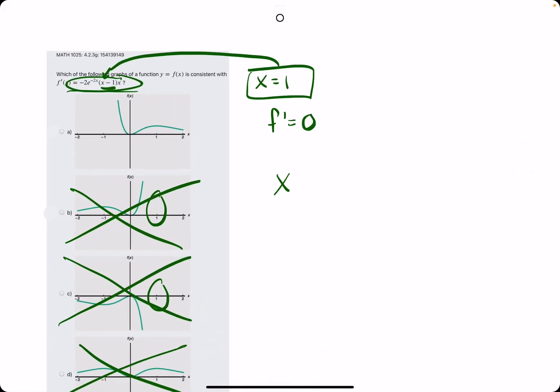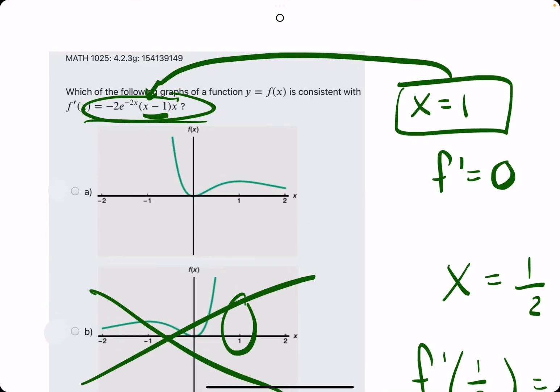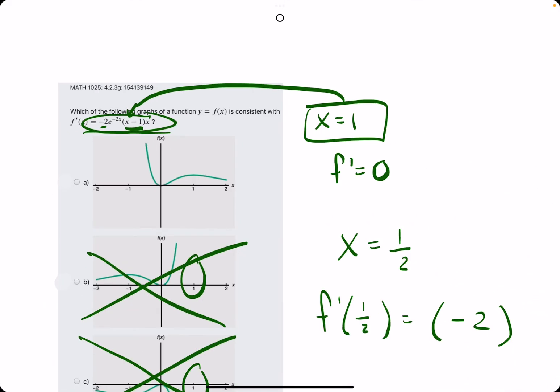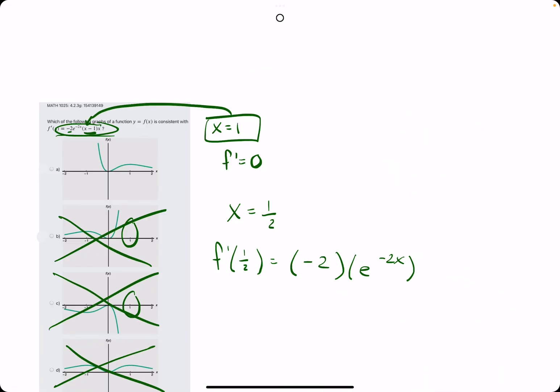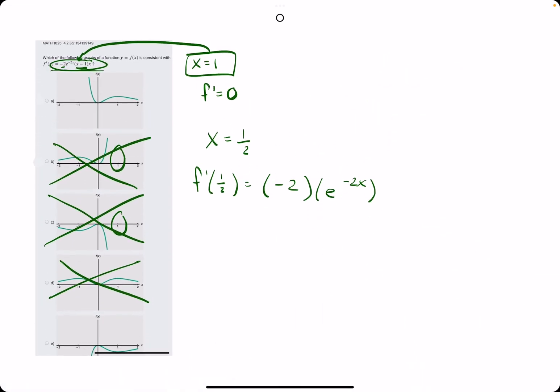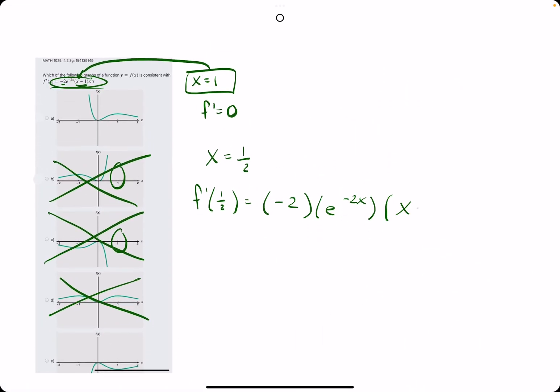And so let's do our x equals 1 half. Plugging in 1 half to f prime. So breaking it up nicely, starting with negative 2, then our e term. Again, it does not matter that the exponent here is negative 2x. E will always be positive.